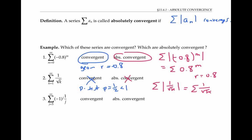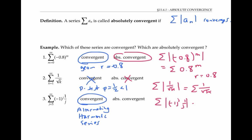The third series is the sum of negative one to the j times one over j. This is a convergent series by the alternating series test. In fact, this is the alternating harmonic series. What about absolute convergence? If we look at the sum of the absolute values of the terms, that's just the same thing as the regular harmonic series, which diverges. So this series is not absolutely convergent.